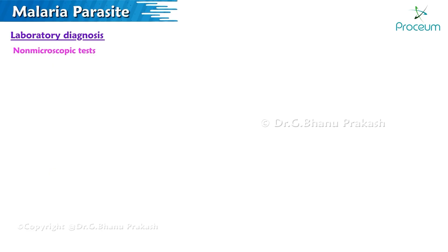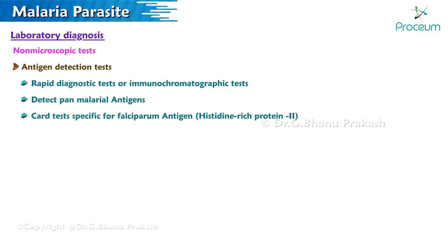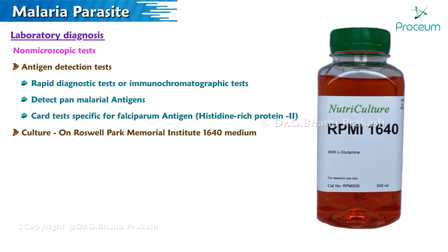Non-microscopic tests include antigen detection tests — rapid diagnostic tests and immunochromatographic tests — which detect pan-malarial antigens. Card tests specific for falciparum antigen detect histidine-rich protein 2. Culture can be done on Roswell Park Memorial Institute 1640 medium. Molecular diagnosis uses polymerase chain reaction targeting 18S ribosomal DNA.